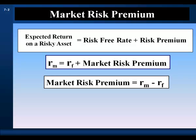Our model is for expected returns, so it's an expectational model, because financial markets are forward-looking and prices are based on the market's expectations for the future. So our market risk premium is an expected market risk premium — it's the market risk premium expected over a future period of time. Unfortunately, we can't directly measure the market's expectation for the market risk premium.